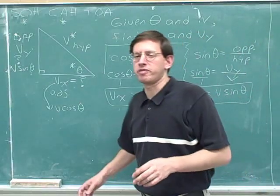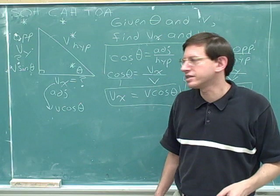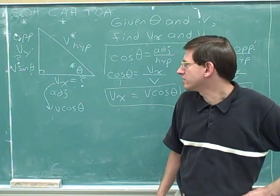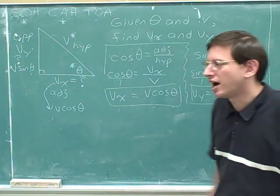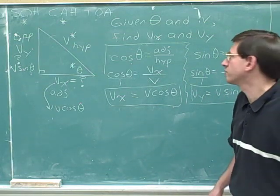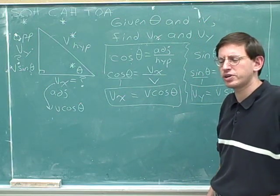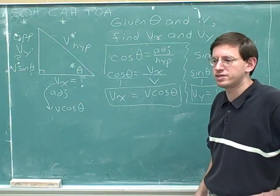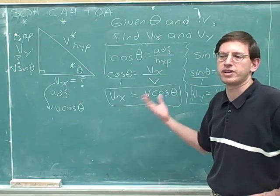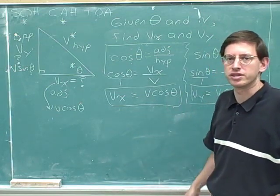In a way this was a review of what we've already been working on — how to find the two legs if you're given the hypotenuse and an angle. In a way it was different though, because we weren't actually given any numbers; we were just told to pretend we had numbers for theta and v. This is a pretty common type of problem in physics, where instead of working with numbers you work with variables, so it's important to start getting comfortable with this.